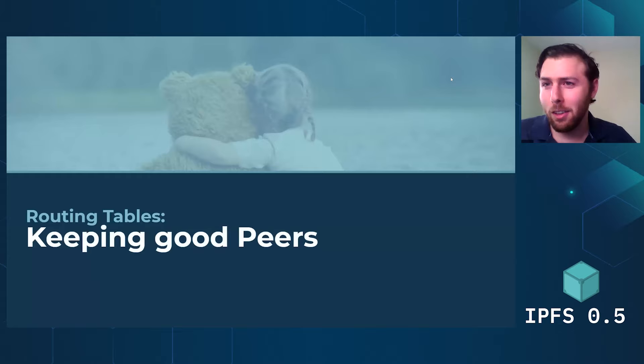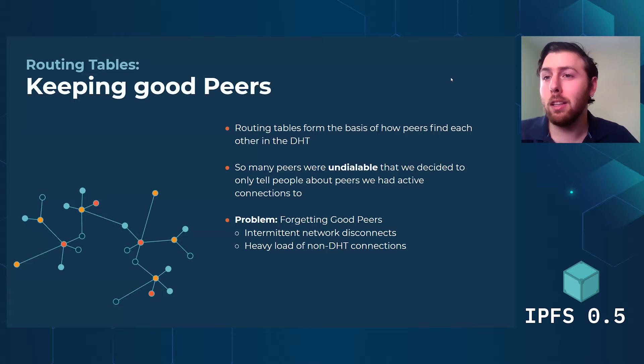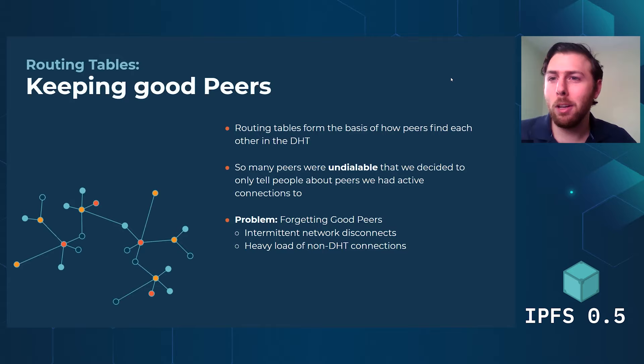So we've cleaned out a lot of our routing tables and gotten rid of the bad nodes. But how do we make sure to keep the good ones? Before, we were trying to be defensive with our routing tables because there were so many undialable nodes. We said, let's only keep people around who we're connected to — then we're guaranteed that when we hear about a peer from someone, they're not offline.